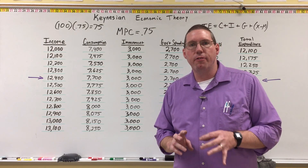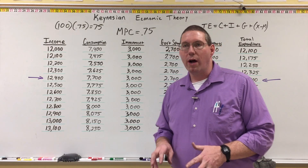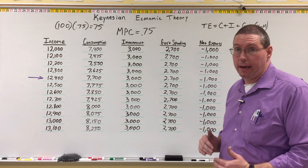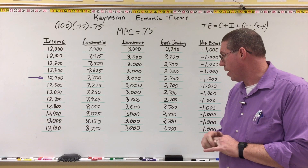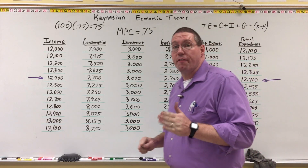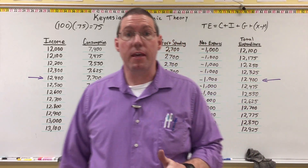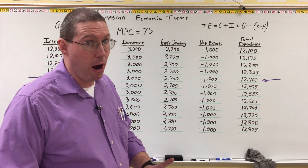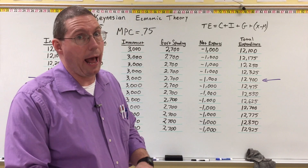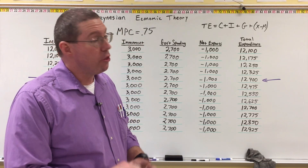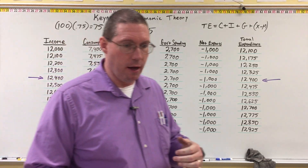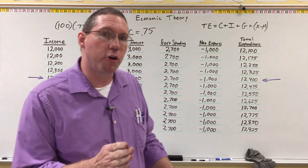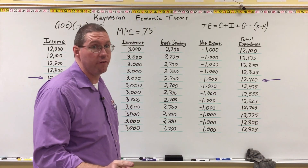Now we can begin to understand what Keynes was arguing in terms of economic theory. He said if there's a problem in the economy, that problem is an aggregate demand problem, not a short-run aggregate supply problem. The problem isn't that wage rates need to adjust and the short-run aggregate supply curve needs to move. What he argued is that the aggregate demand curve needs to move.